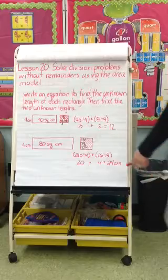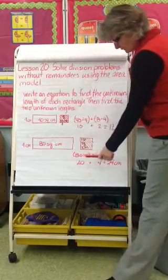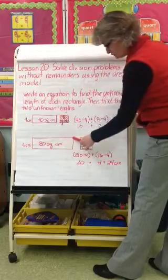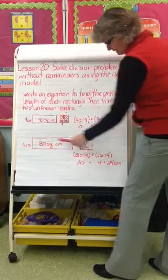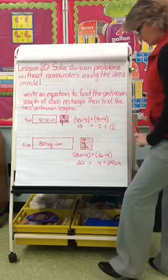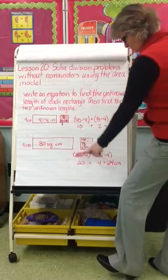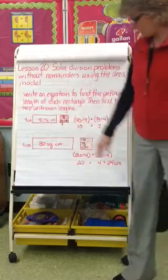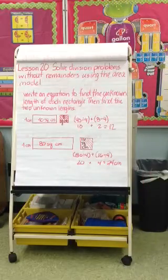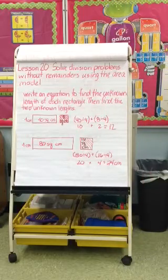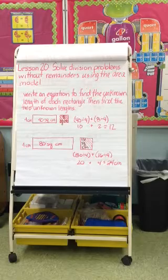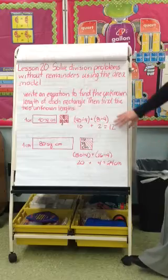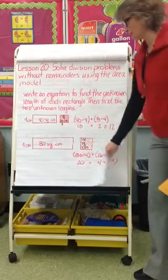But we're going to use the area model. And we would take 80 divided by 4. This part would be 20. And then 16 divided by 4, which is 4. So 20 plus 4 is 24. You'll notice by breaking it into number bonds in smaller pieces, it's a lot easier for you to divide 80 divided by 4 and 16 divided by 4 rather than 96 divided by 4.